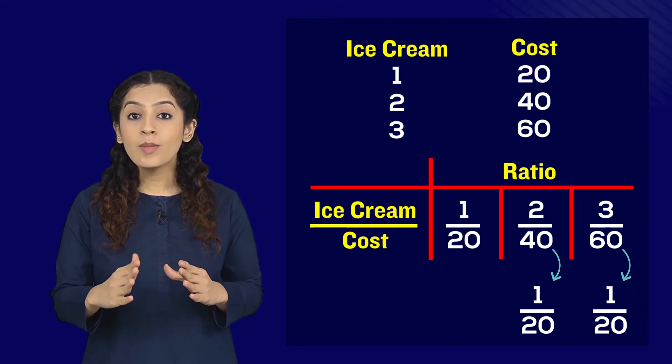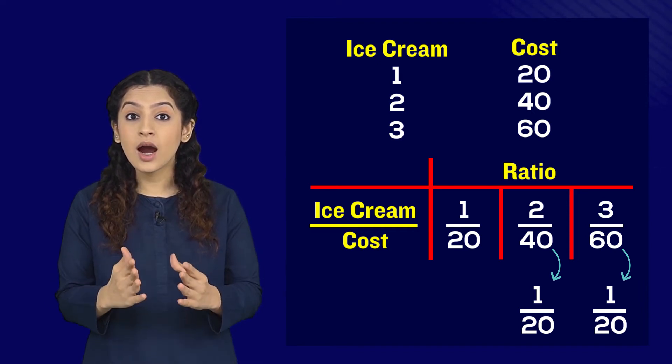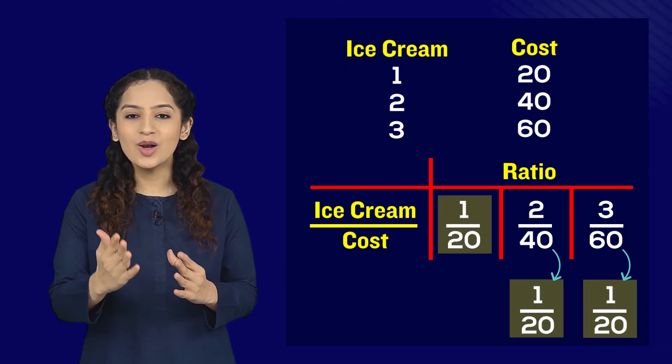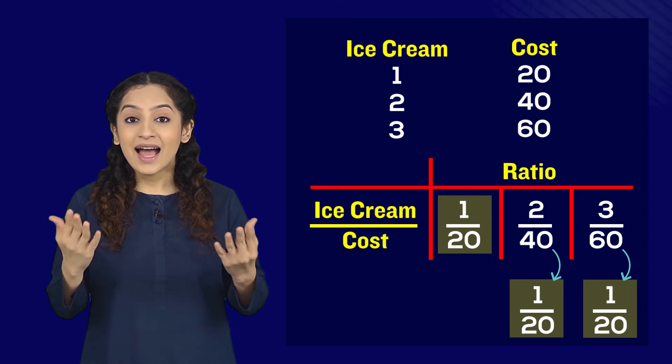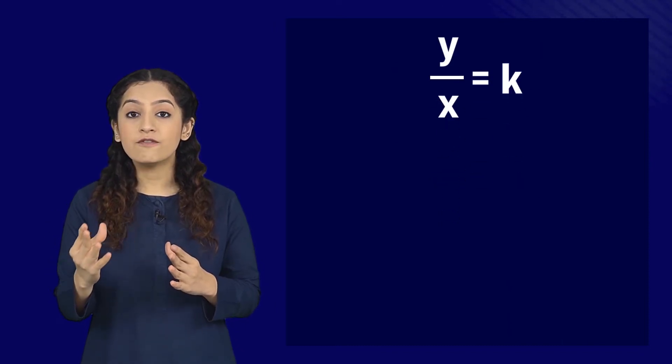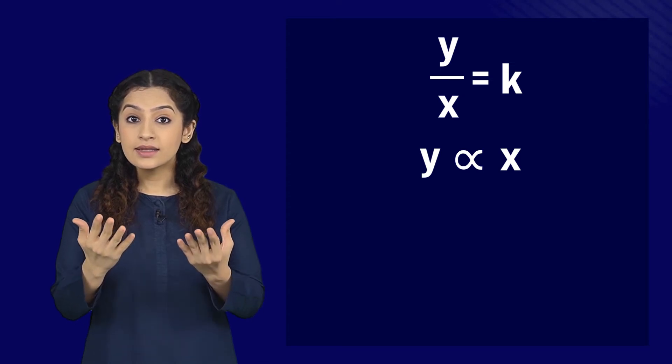Once we simplify them we see that the ratios are the same as that for one ice cream. So no matter how many ice creams there are, as long as the cost is varying directly, the ratio will always be a constant. And that's exactly what we were saying: if two quantities are varying directly, then their ratios will always be a constant.